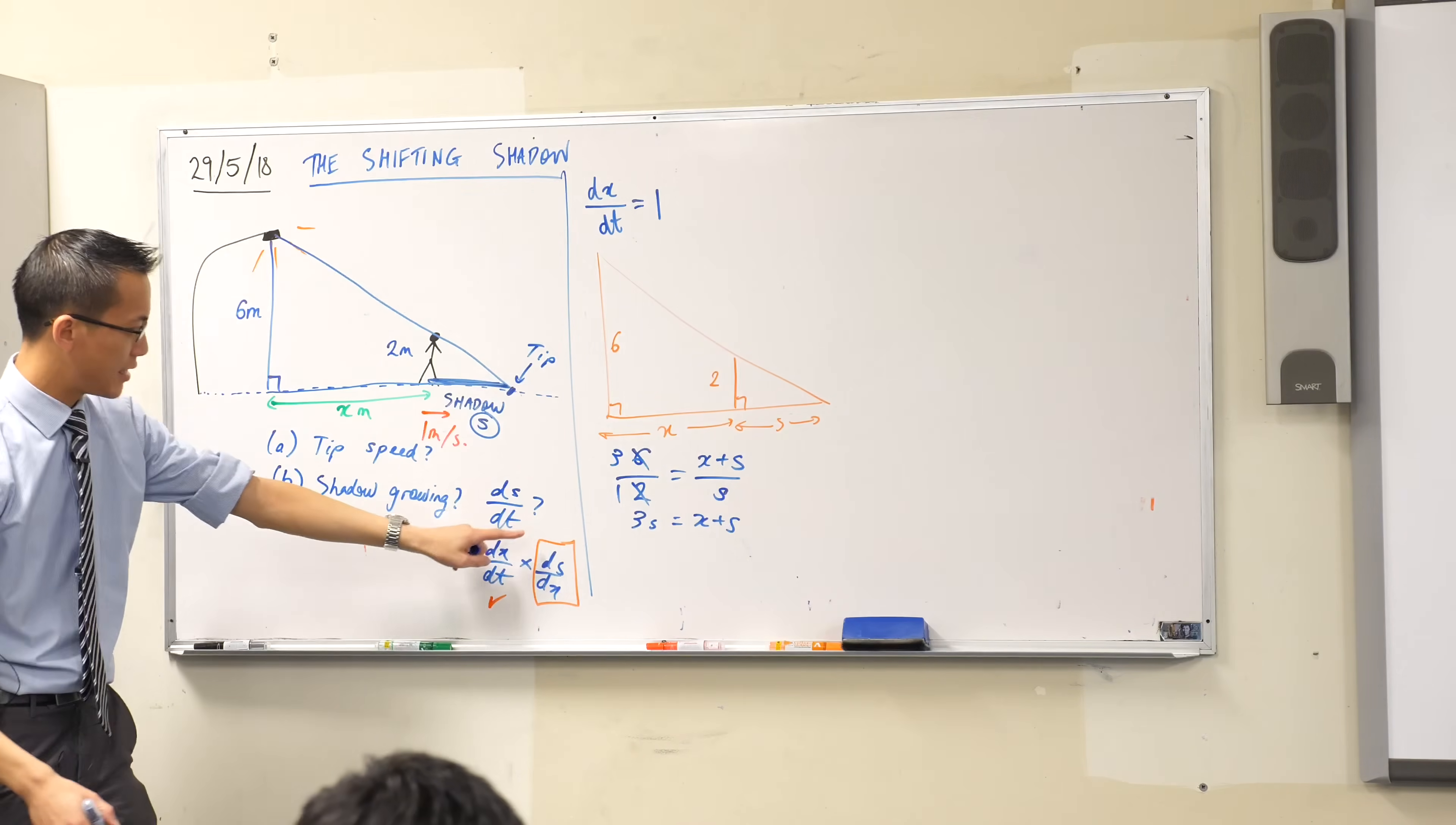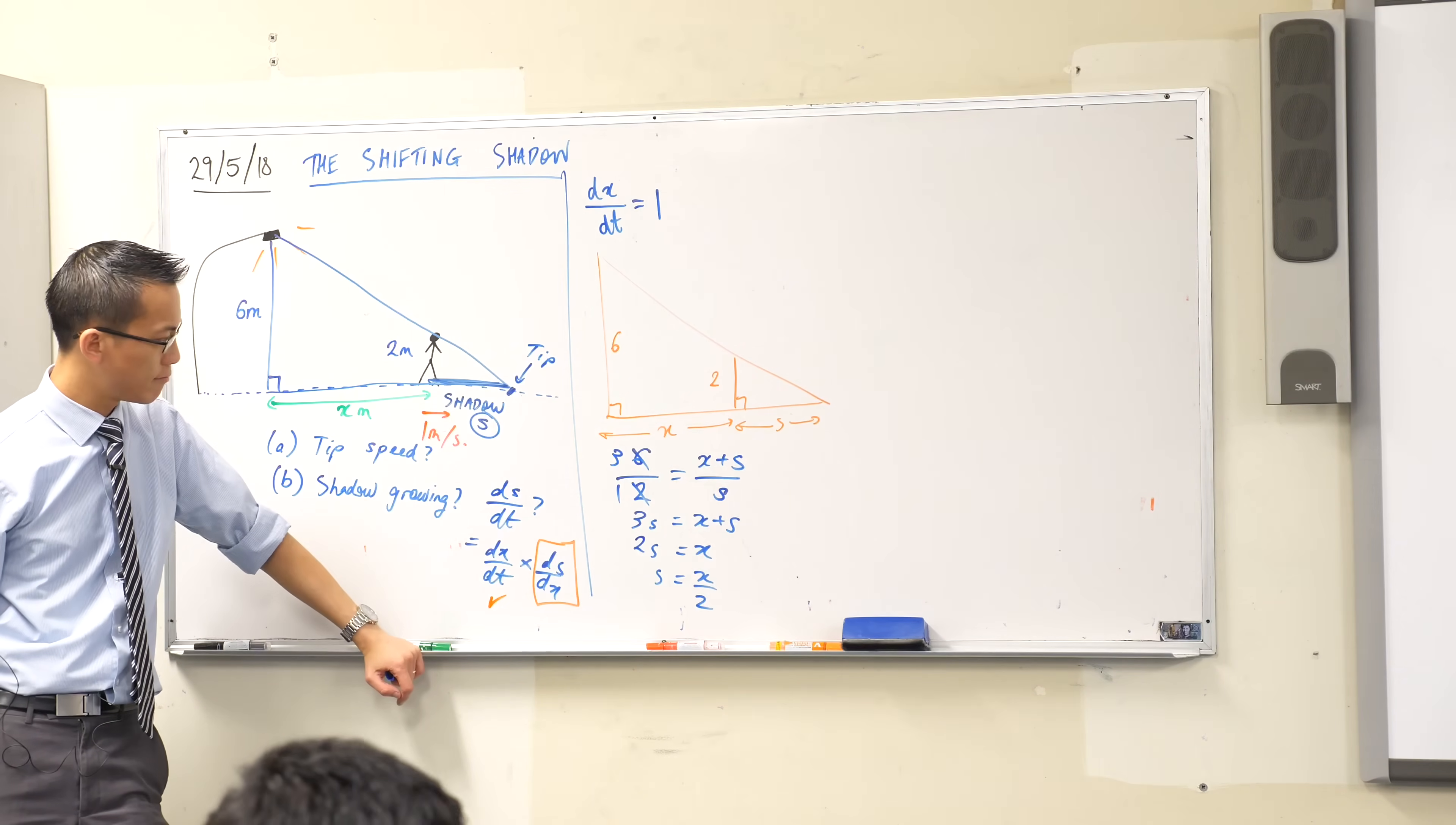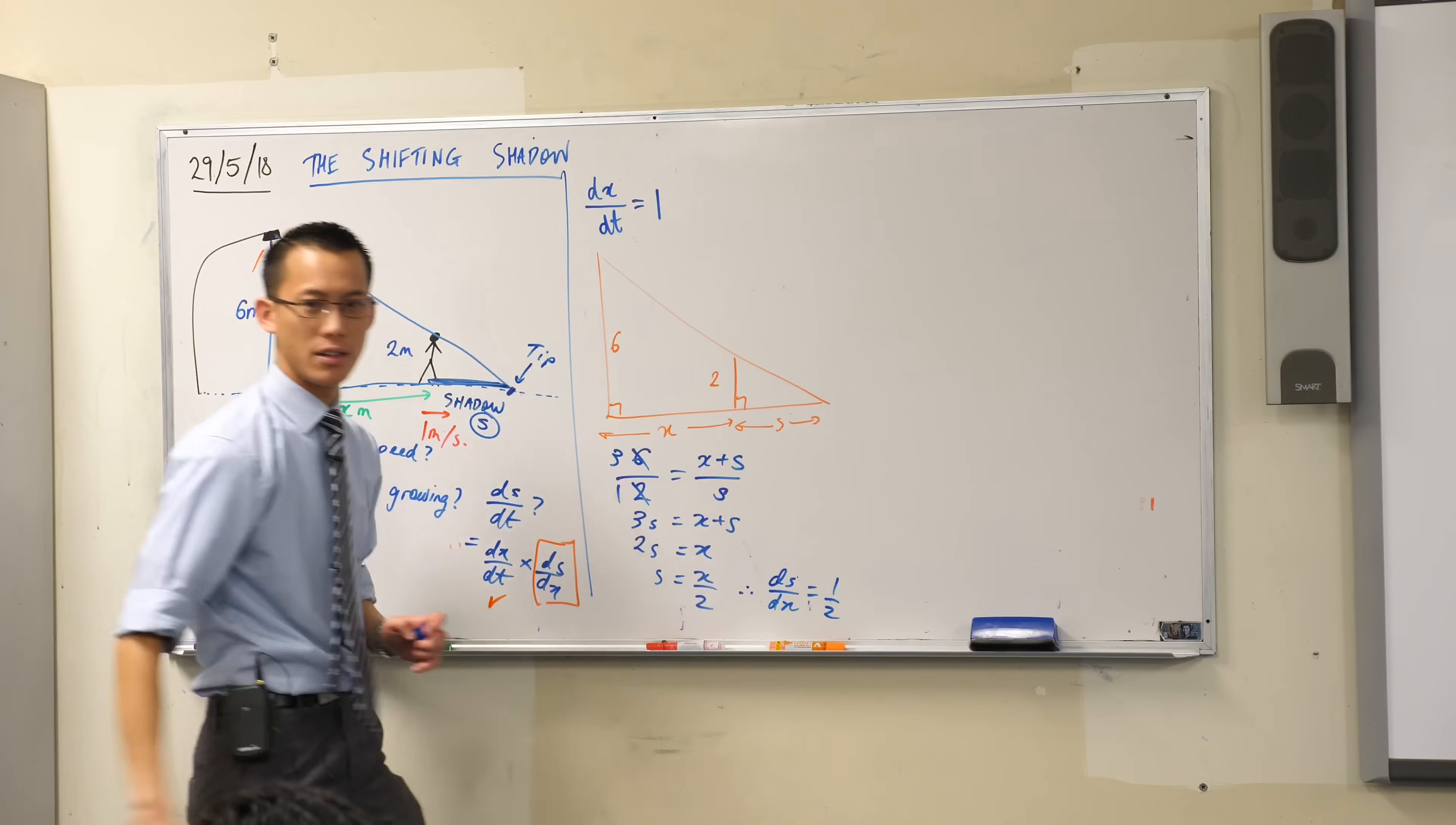Let's just tidy this up. I want ds/dx so I guess I should have s in terms of x. So I've got 2s equals that, s equals that. You happy with that? So what's this going to be? That derivative, ds/dx. It's just a half. That's nice and easy, right? So I can just say ds/dx equals a half. You okay with that?